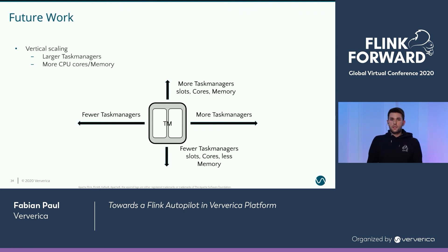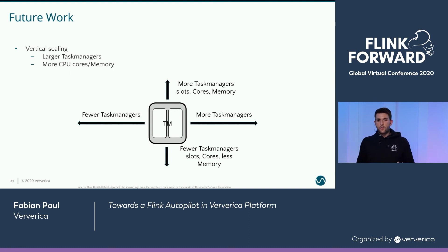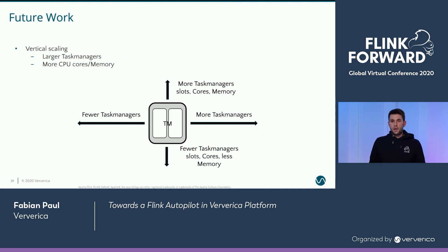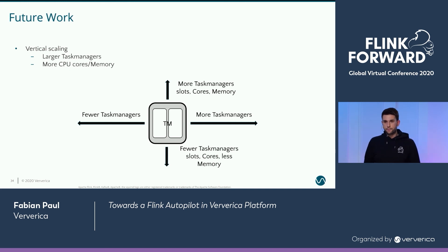I'm almost at the end and want to share the perspectives we're currently pursuing for an even better autopilot experience. The first thing we want to improve is not only horizontal scaling but also vertical scaling. Currently we're only adding task managers to your graph and decreasing parallelism, which in some cases is not ideal. It would make more sense if your machines or VMs have more capacity to also spawn larger task managers, because then you avoid inter-task-manager communication. And as a long-term strategy, we want this as dynamic scaling for the pods your task managers are running in.